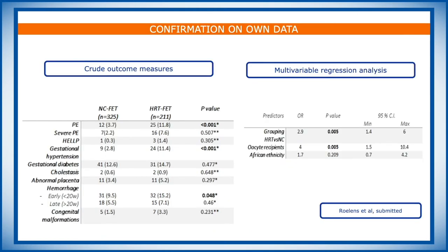We had a look at our own data, and we compared retrospectively our frozen embryo transfers in a natural cycle versus in the HRT cycle. We saw exactly the same: a higher rate of preeclampsia and a higher rate of gestational hypertension in the crude results, but also when corrected for confounders, the impact of the HRT cycle on the incidence of preeclampsia remained statistically significant.